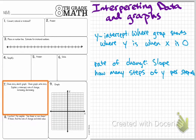Let's start by describing those two terms, which are really important when we're talking about our graphs. The first is y-intercept, and the y-intercept is always where our graph starts. Another way to think about that is: where is y when x is equal to 0? It's called the y-intercept because this is where the line will cross the y-axis on the graph.